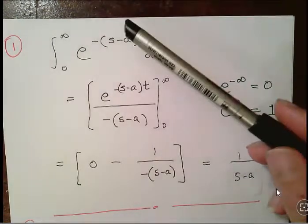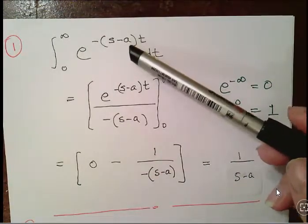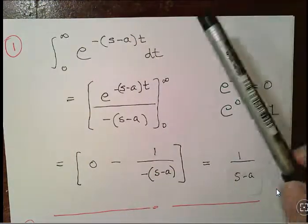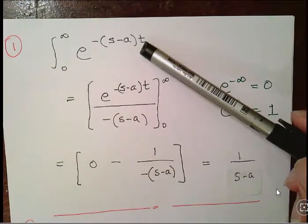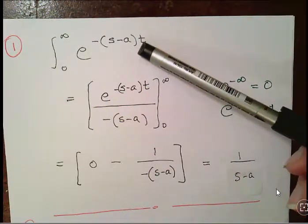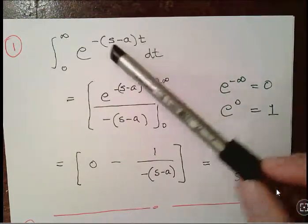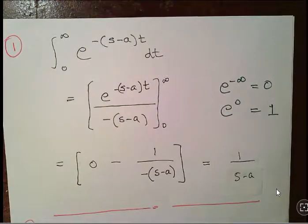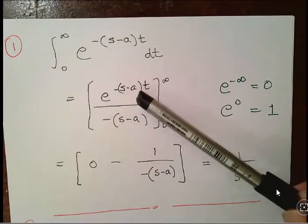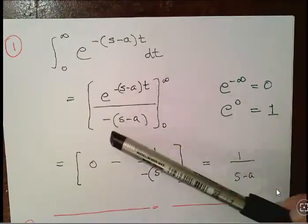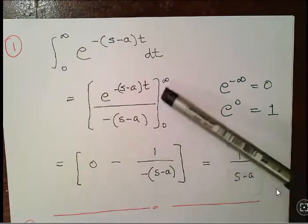This follows the pattern used in previous videos. I'm expressing it as e to the minus, in brackets, s minus a, times t. This makes the evaluation clearer — we need a minus sign times t so that when t goes to infinity, the exponent goes to minus infinity.